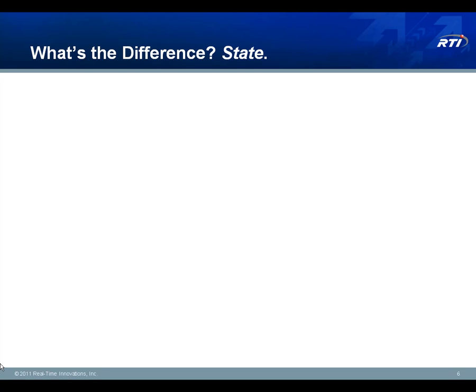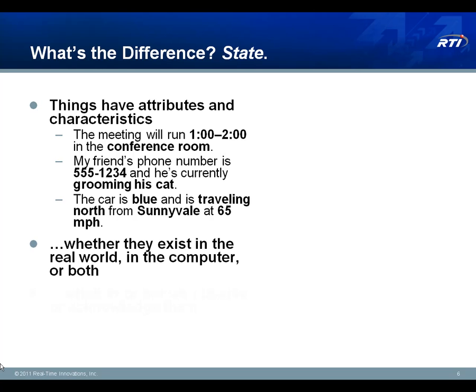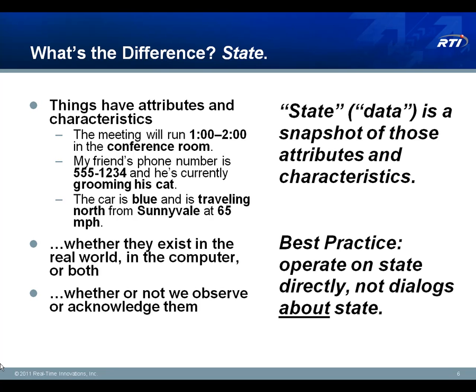You probably have an idea from both of these examples which alternative is better and easier to use. The difference between the easier, more reliable approach and the other was that the better approach made state explicit. Things in the real world have attributes and characteristics that describe them — whether they exist in the real world or only in the digital world. We call the snapshot of all these traits an object's state, and when that state exists in a computer we call it data. Systems are easier to build, faster to implement, and more reliable when we can operate directly on the state of the objects we care about, rather than exchanging meta-information about changes to that state.